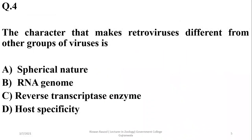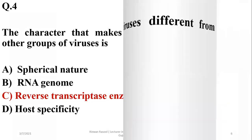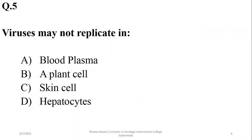The character that makes a retrovirus different from other groups of viruses is their reverse transcriptase enzyme. Other viruses may share spherical morphology, DNA or RNA genomes, or host specificity. Viruses may not replicate in blood plasma as they require a definite host cell to replicate.